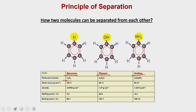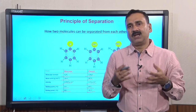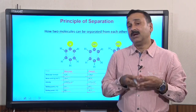The molecular formula of benzene is C6H6, phenol is C6H6O, and aniline is C6H5NH2. The molecular weights are 78, 94, and 93 respectively. The density of benzene is 0.87 g/cm³, phenol 1.07, and aniline 1.02. The melting point of benzene is 5.5°C, phenol 40.5°C, and aniline -6.3°C. The boiling points are 80.1, 181.7, and 184.13°C. All three molecules vary in many physical and chemical properties.